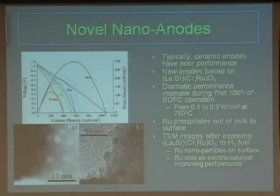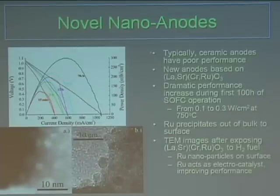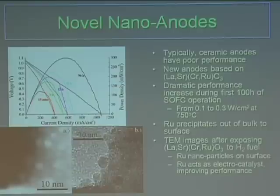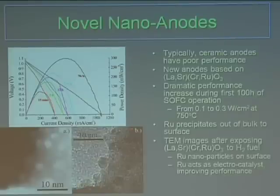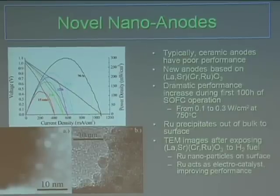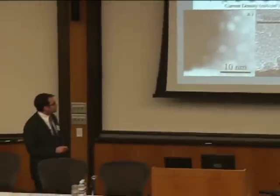This is the first of two examples of nanoparticle processing we're doing — a novel technique developed here at Northwestern. Typically ceramic anodes have fairly poor performance. However, using a lanthanum chromite doped with strontium and ruthenium ceramic anode, we see that over time as we increase the length of operation from 15 minutes up to 96 hours, there is a dramatic increase in cell performance — quite opposite to what you usually see. The reason is that ruthenium precipitates out of the bulk ceramic. TEM images show these ruthenium particles around five nanometers across precipitating out to the surface, and as they precipitate out, performance increases because these are the electrocatalyst particles for the reaction.